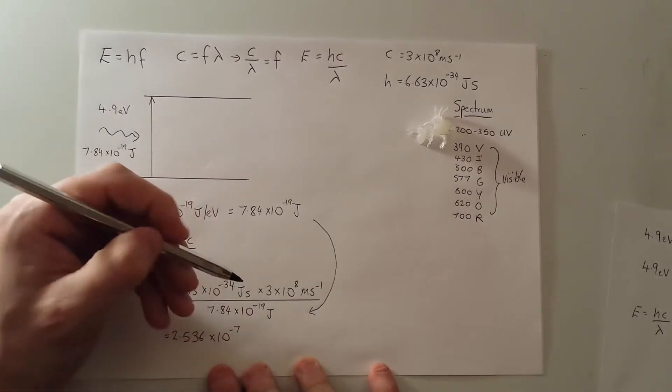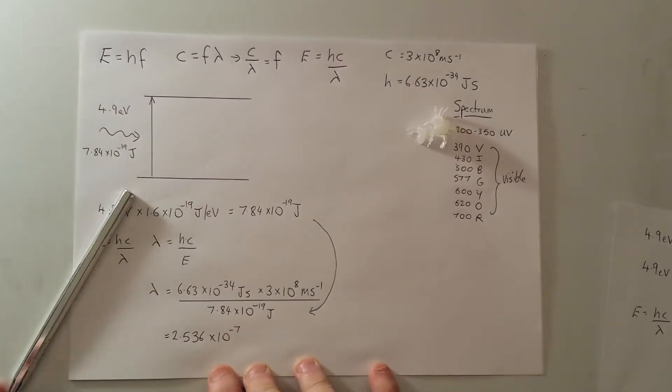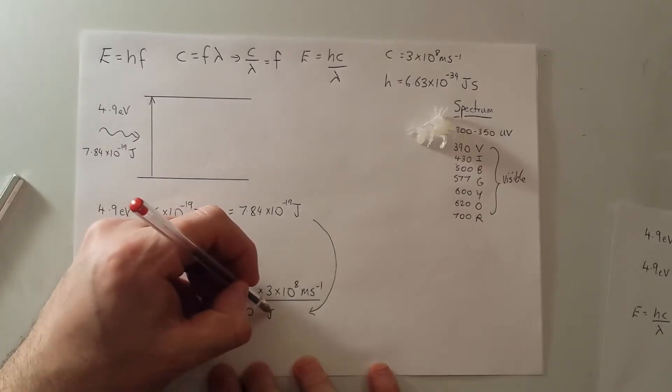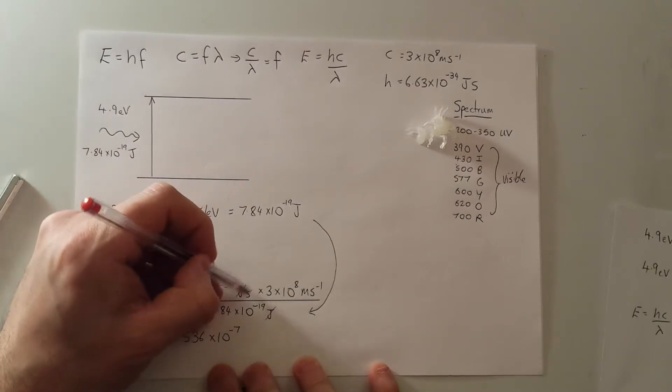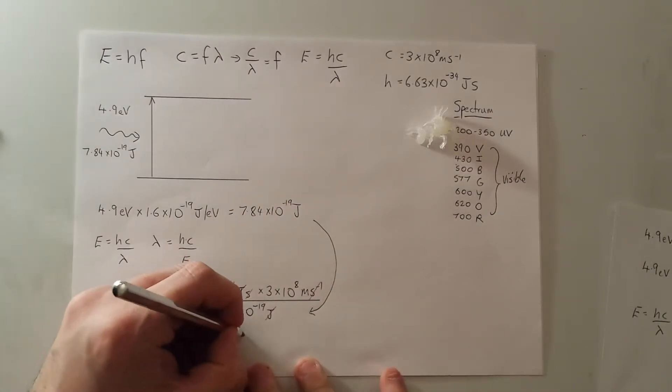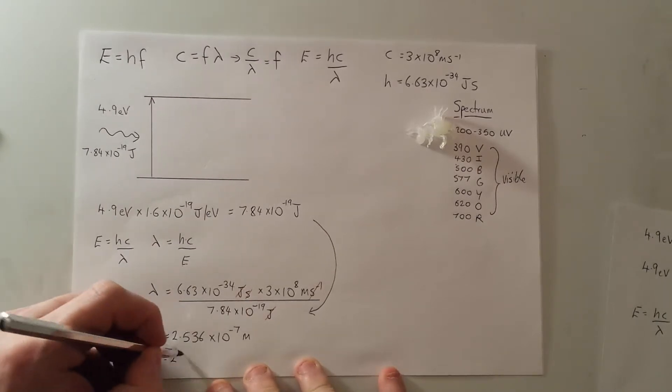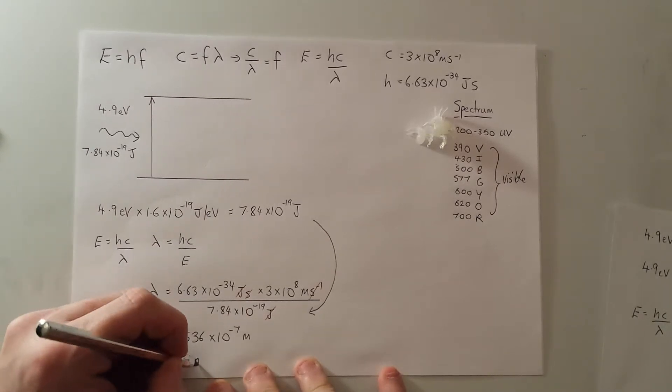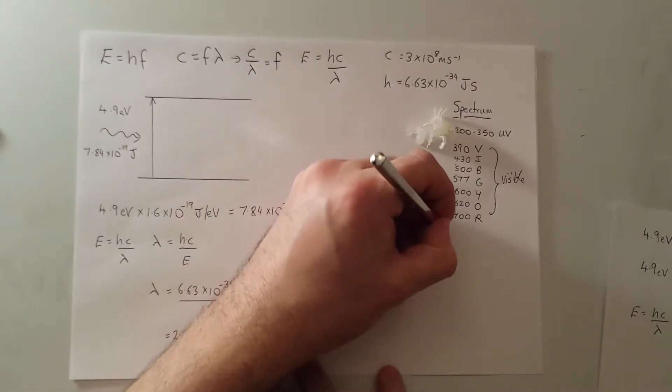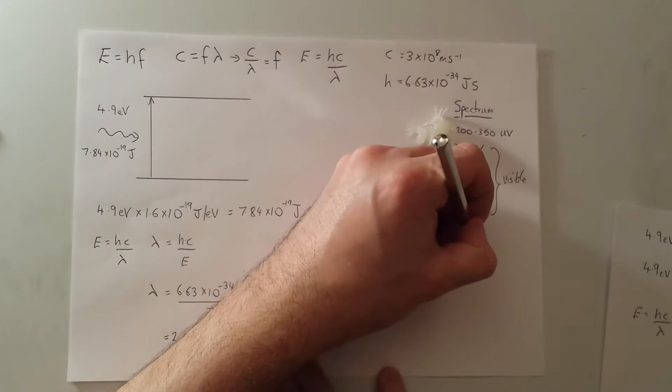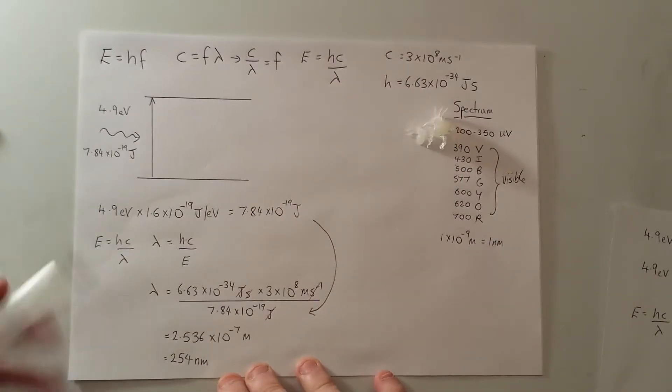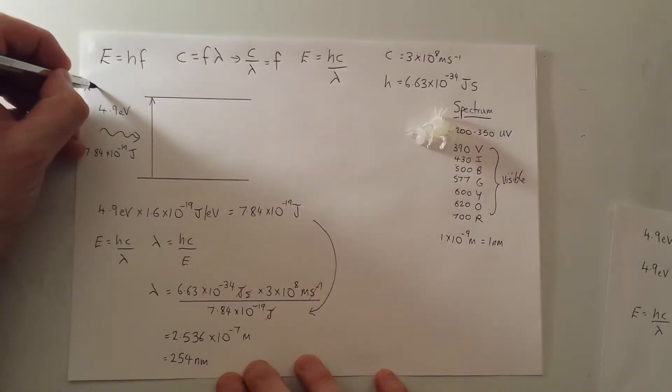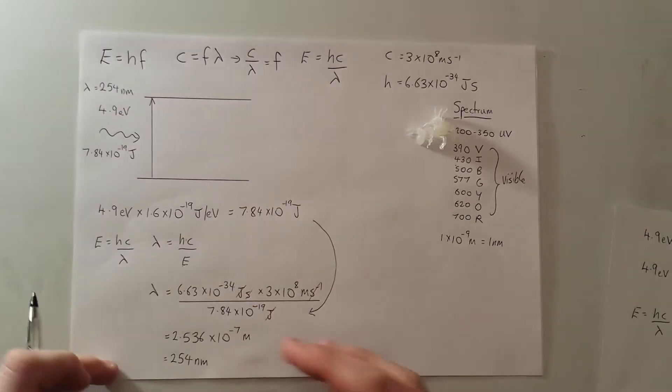Now cleverly, joules cancel with joules. Let's put a line through there. Hold on. Joules and joules. Okay. And seconds and seconds cancel. Leaves us with a unit of meters or 254 nanometers, because 1 times 10 to the minus 9 meters equals 1 nanometer. So we've now worked out the incoming photon at a wavelength of 254 nanometers.